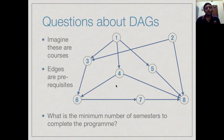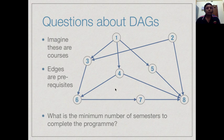Let us look at a different question about DAGs. Suppose we have a DAG where the vertices represent courses and the edges are prerequisites. These are courses we must complete to finish a degree. Every course requires a semester, but we can do more than one course in a semester. The question is: what is the minimum number of semesters needed to complete this program consisting of 8 courses with these prerequisites?